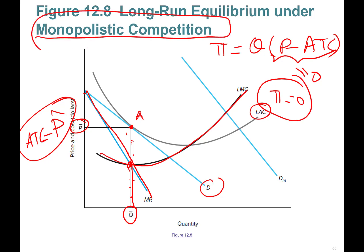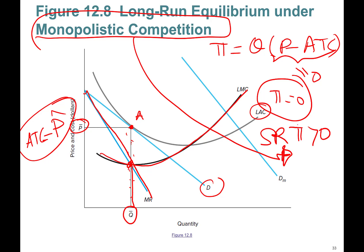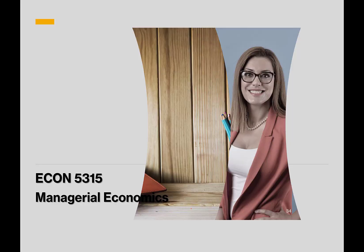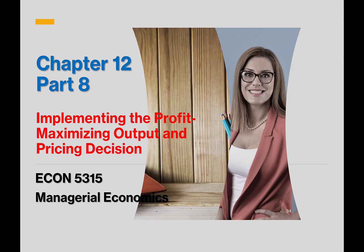The key difference between a monopolistically competitive firm and a monopoly: in the short run both can have positive economic profit, but for the monopolistically competitive firm this goes to zero in the long run. A monopoly, however, can actually sustain positive long-run economic profits. In the next part we will implement the profit-maximizing output and pricing decision.